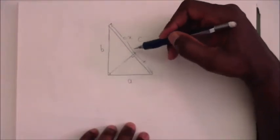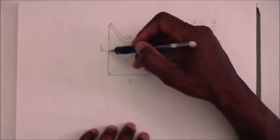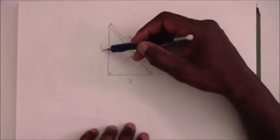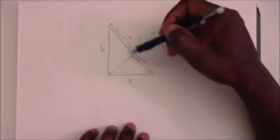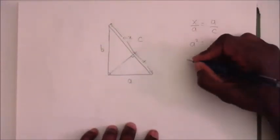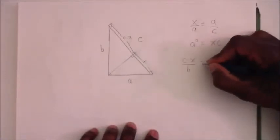And now we'll look at this triangle here and notice that the second to longest side, which is C minus X, divided by the hypotenuse of this triangle, which is B, is the same as the second to longest side of the big triangle, which is B, divided by the hypotenuse of that triangle, which is C.